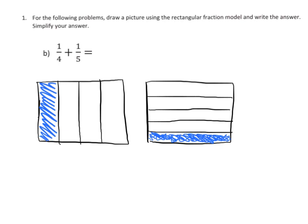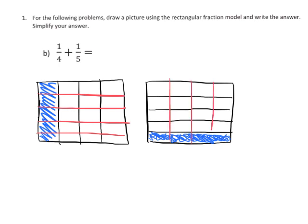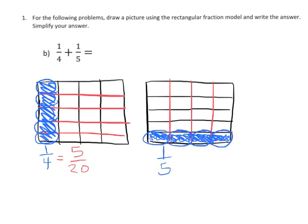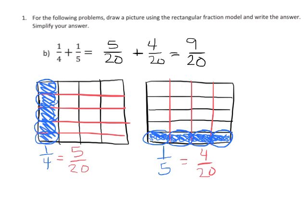Just like we did in the last example, we're going to take each of our fourths and cut them into fifths, and each of our fifths and cut them into fourths. What used to be one-fourth suddenly becomes five-twentieths, and one-fifth becomes four-twentieths. So now we have common denominators: five-twentieths plus four-twentieths equals nine-twentieths.